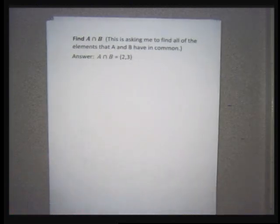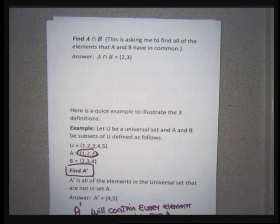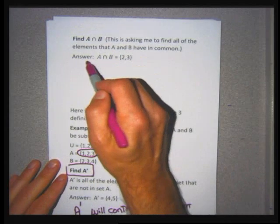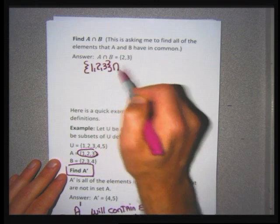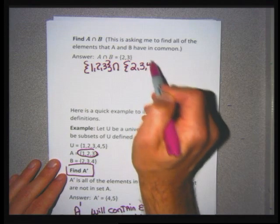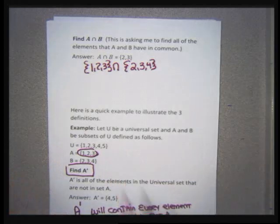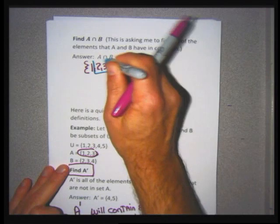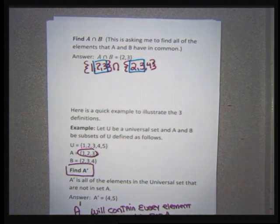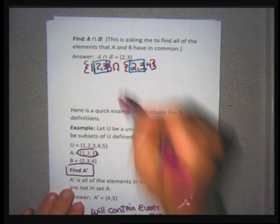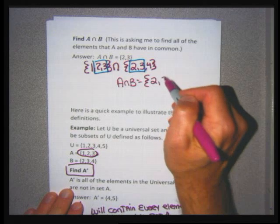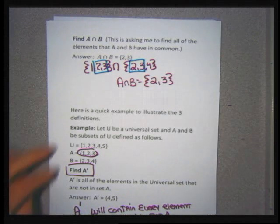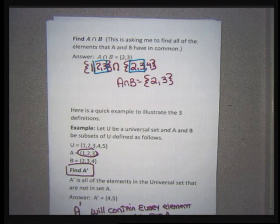Next I find A intersection B. Set A contains 1, 2, and 3. Set B contains 2, 3, and 4. A intersection B is what those two sets have in common. Looking at both sets, what they have in common are the numbers 2 and 3. When I intersect a set, I get another set, so I put it in set braces. A intersection B is the set containing 2 and 3.